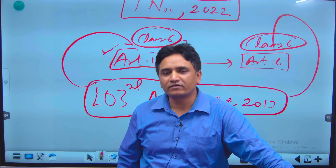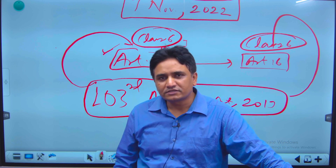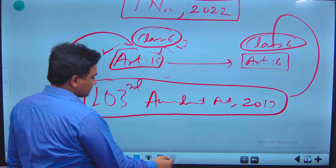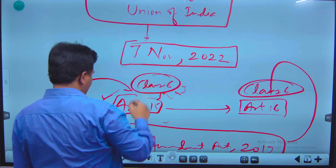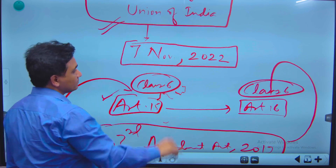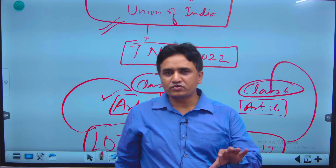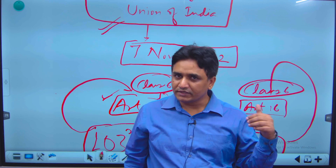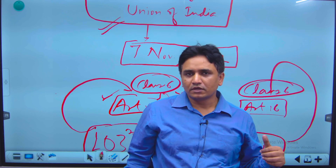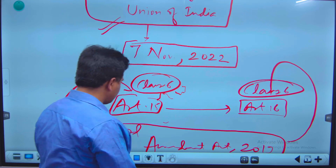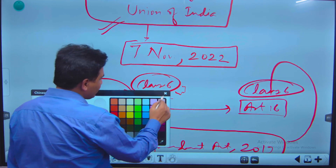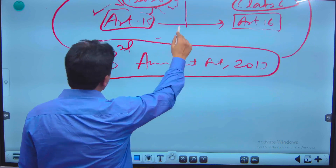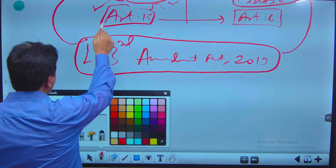Anyone willing to understand the real idea of EWS should know about these articles first. Without knowing these articles, you won't be able to have the basic idea of what this case and this judgment are all about. So I will bring the relevant provisions of these two articles. To start with, I am making the background so you can understand the judgment easily. First, I will talk about Article 15, specifically Article 15 Clause 4.